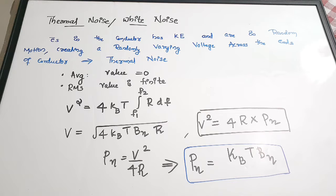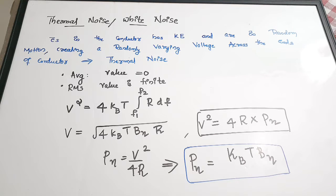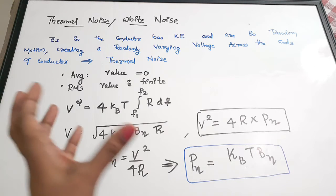Thermal noise or white noise is created due to electrons and their random motion inside a conductor. The electrons in the conductor have kinetic energy, and due to this kinetic energy they are in random motion. This random motion creates a randomly varying voltage across the ends of the conductor, which constitutes the thermal noise.